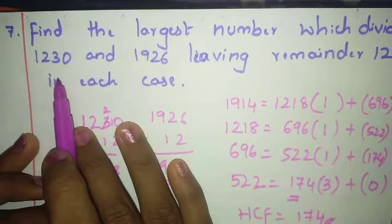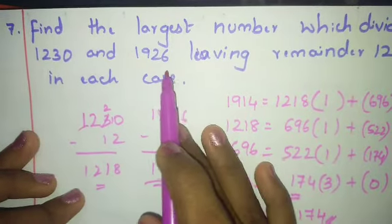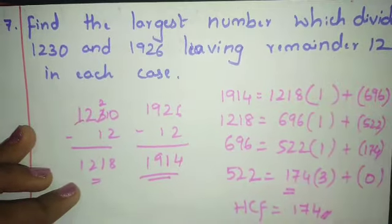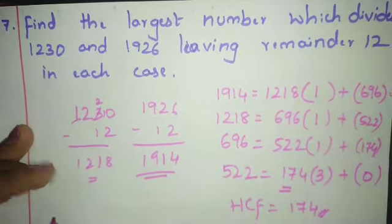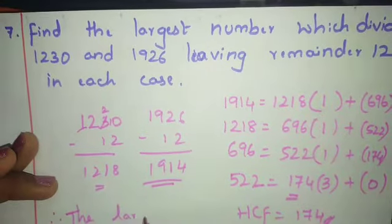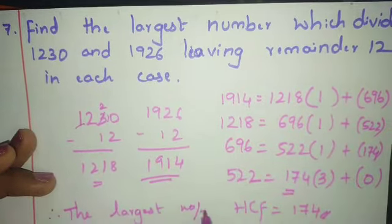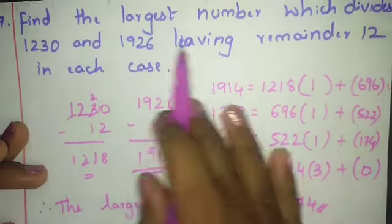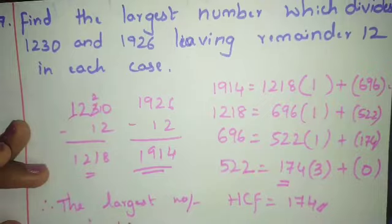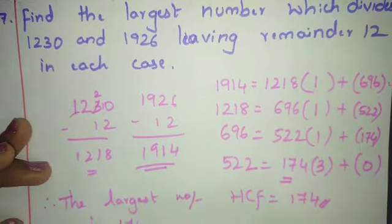Write the answer: the largest number which divides 1230 and 1926 leaving remainder 12 is 174.